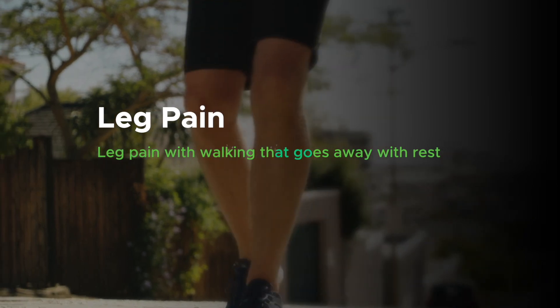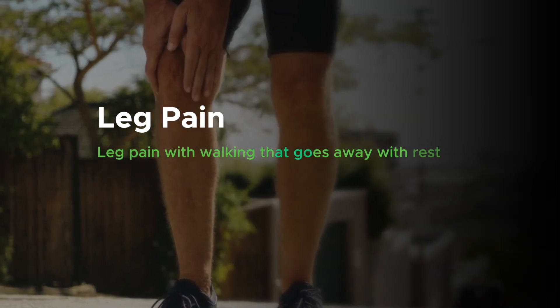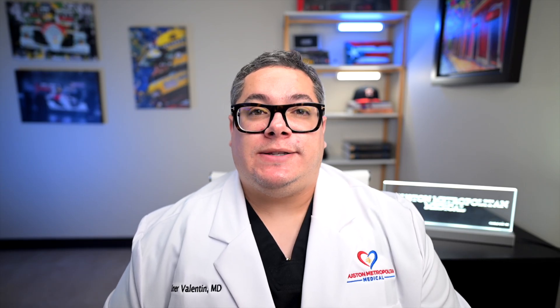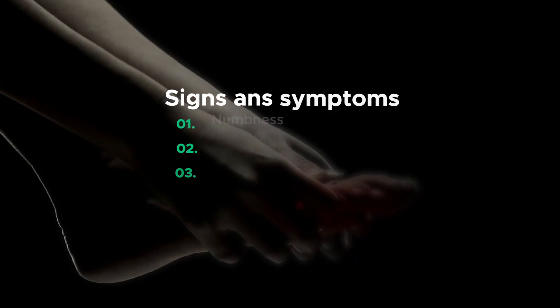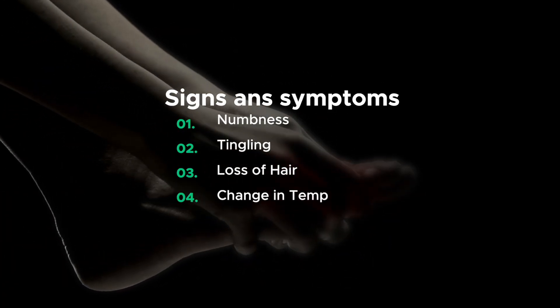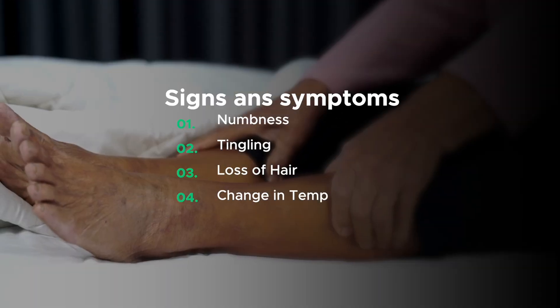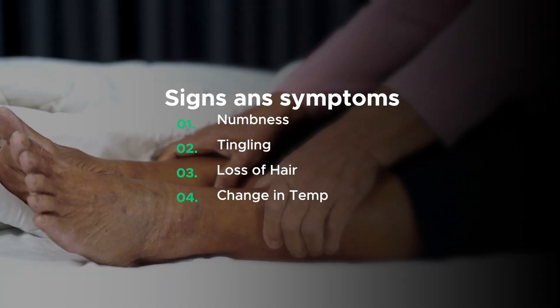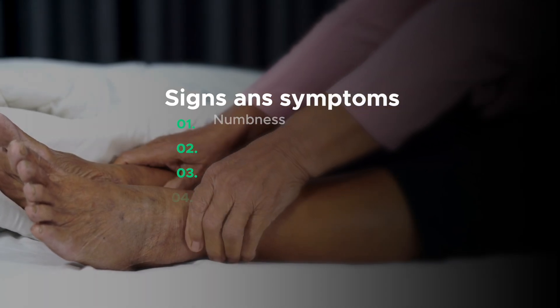So what signs and symptoms can peripheral artery disease present with? The number one most common complaint is leg pain, and this leg pain is usually when walking. Patients complain that after three to five minutes of walking, they start developing an achiness, cramping, or heaviness in the lower extremities that is relieved with rest after two to three minutes when they stop walking. Other signs and symptoms are numbness, tingling, loss of hair in the extremities, and sometimes patients can perceive that one extremity is cooler to the touch than the other.